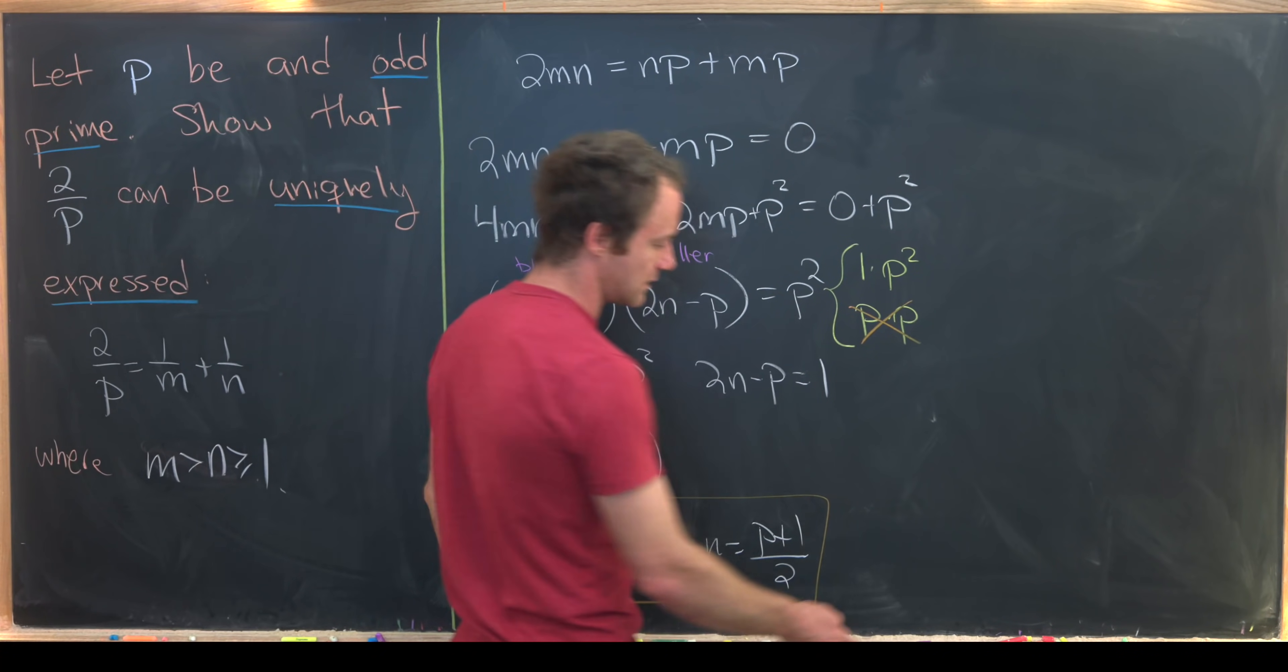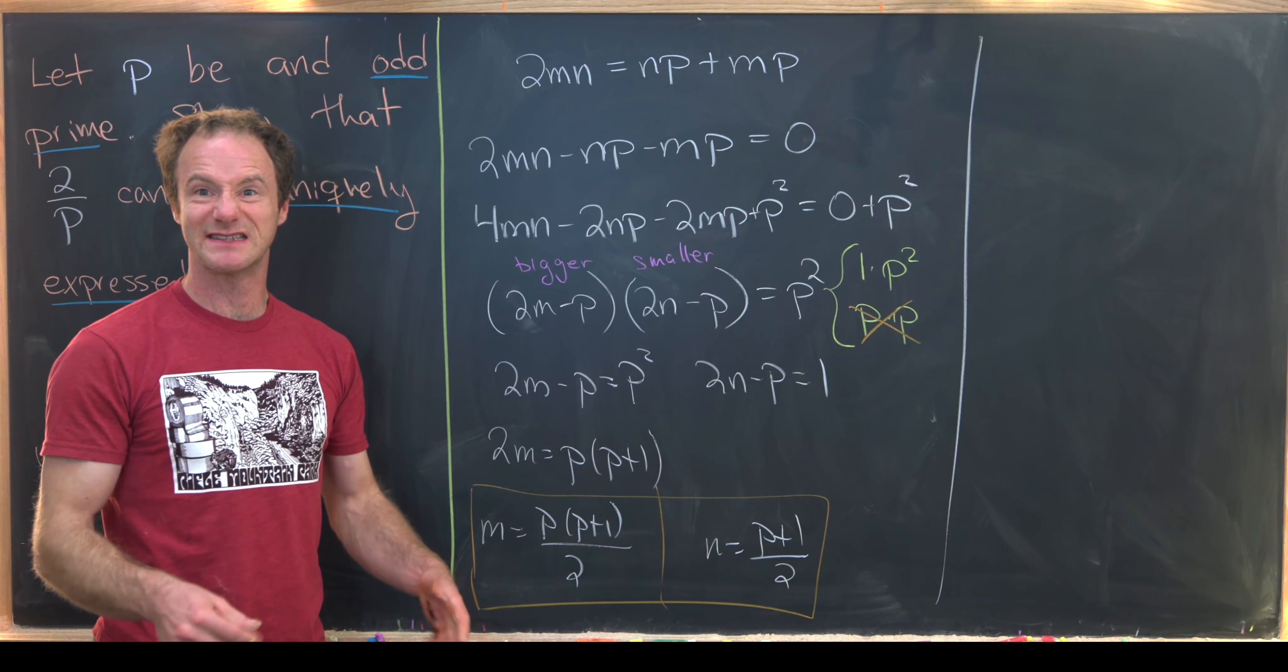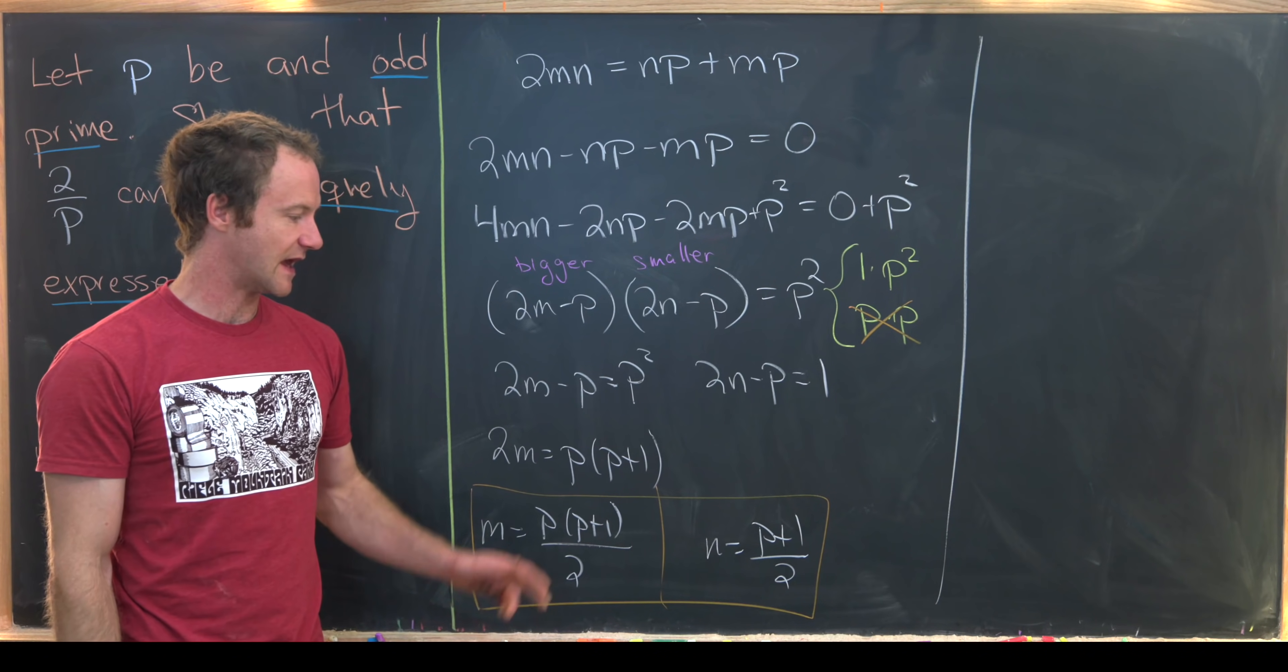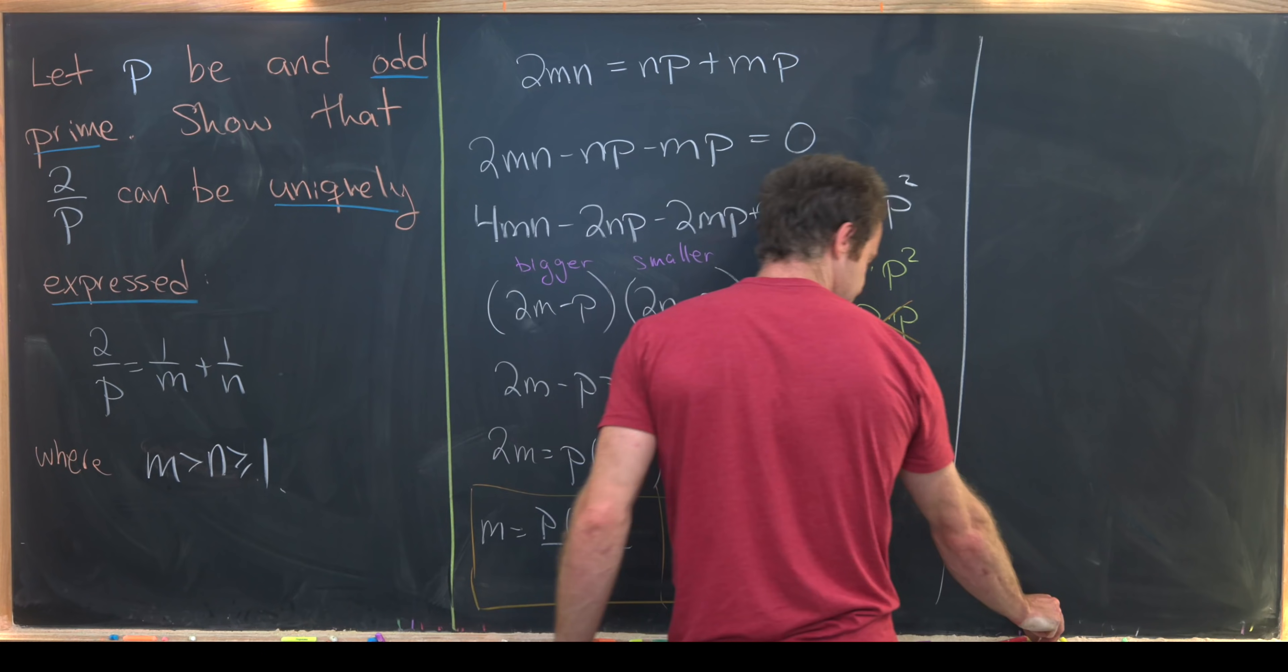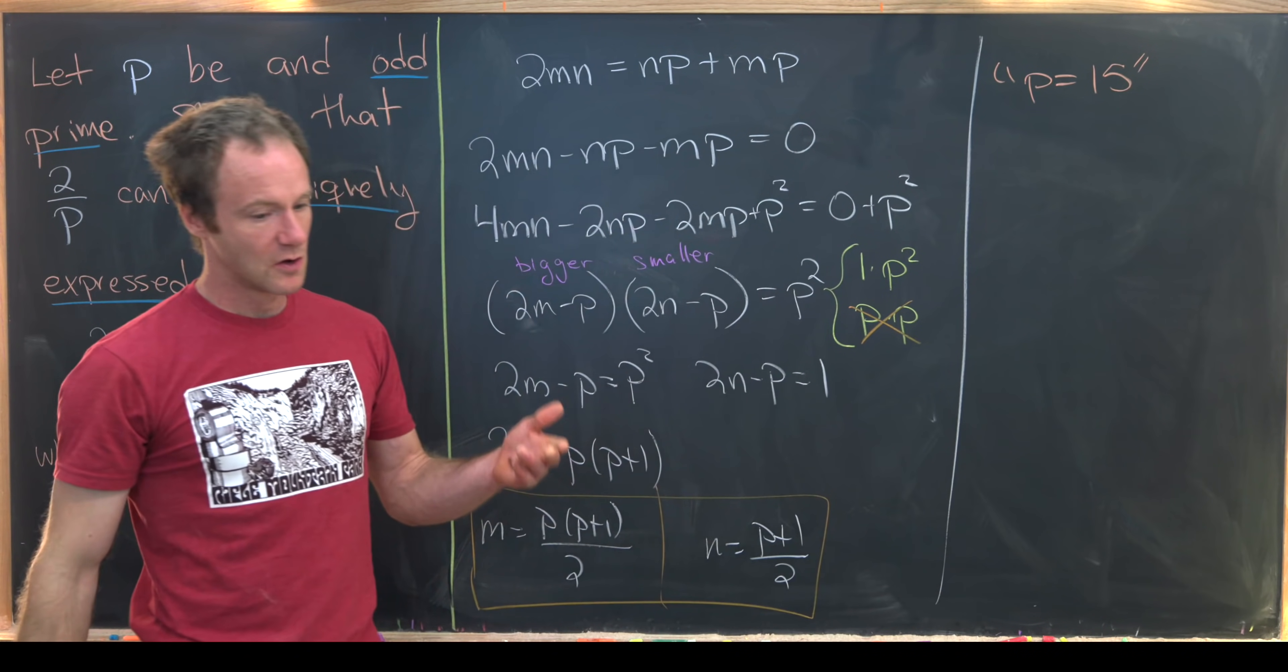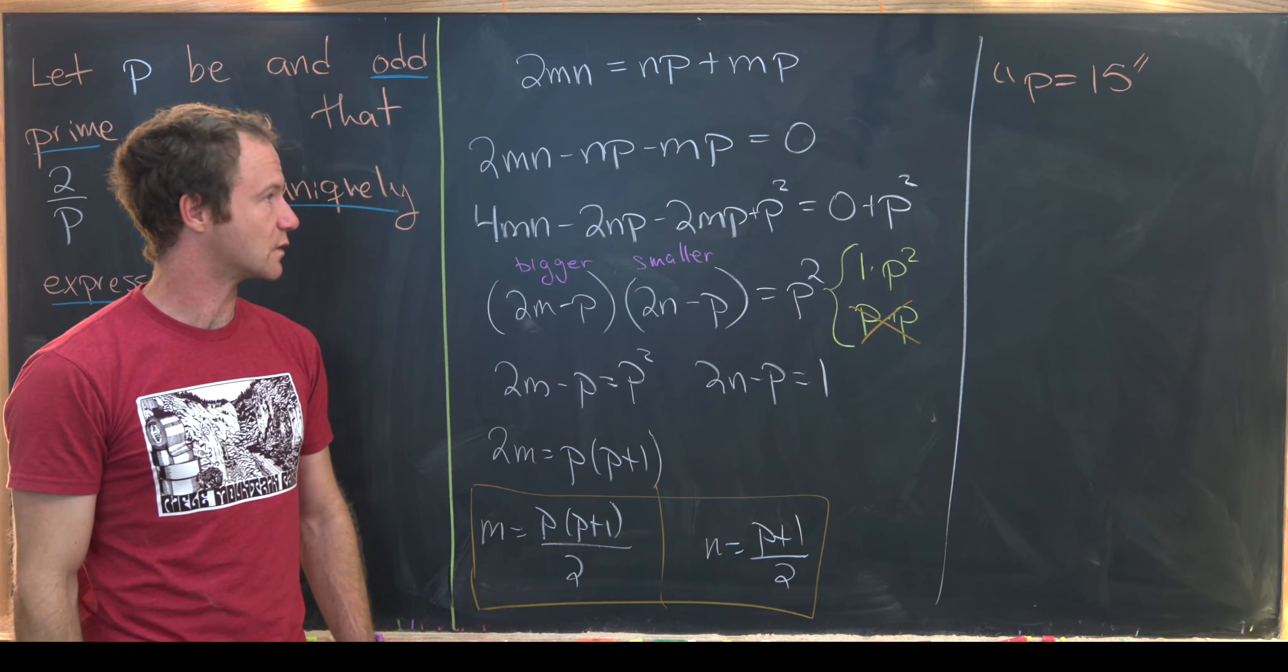Okay well let's maybe look at something in parallel to this. An example where our P is not a prime. It's a composite number. And how we do not get uniqueness in that case. So I'm going to just use P again. Let's set P equal to 15. Why 15? Well that's the first odd composite number. So it's maybe like the easiest one to work with.